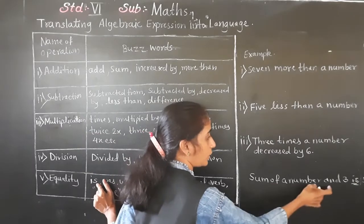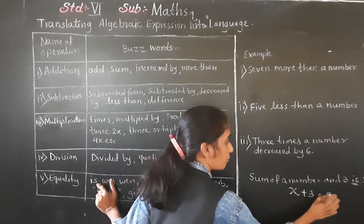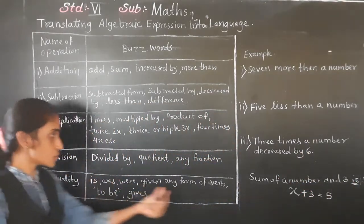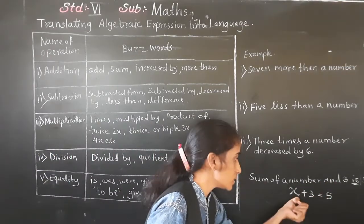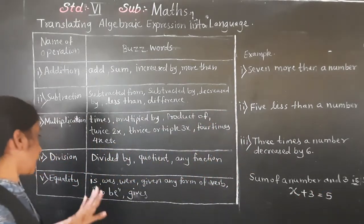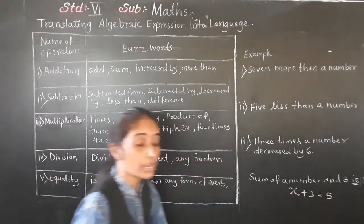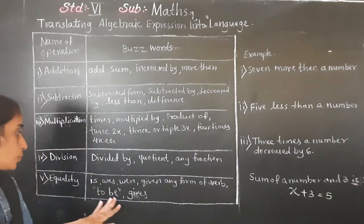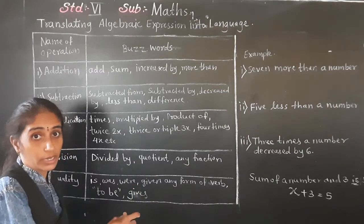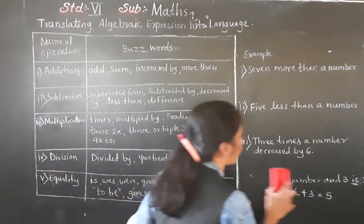Sum of a number and three is five. A number means I consider x, and three is five. The word 'is' shows equality. Equality words include: is, was, were, given, to be, it gives — any such form indicates an equals sign.